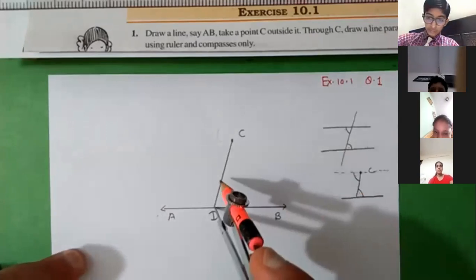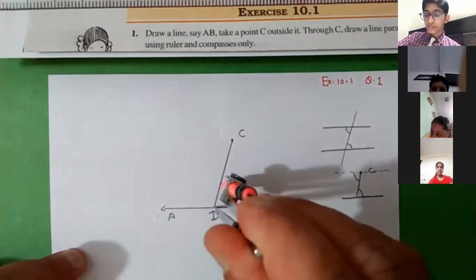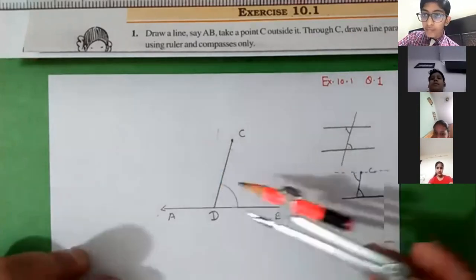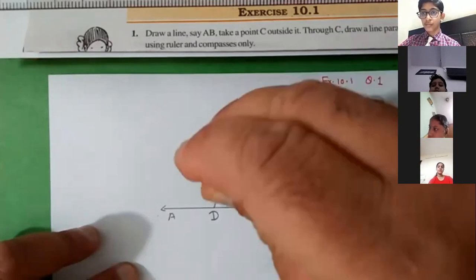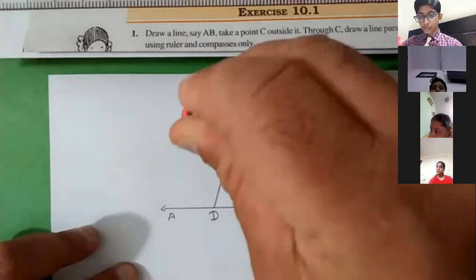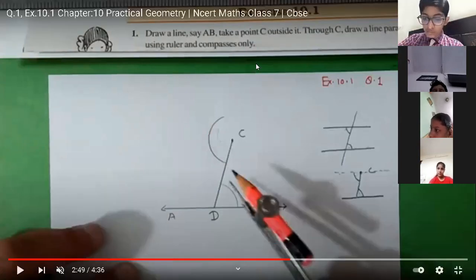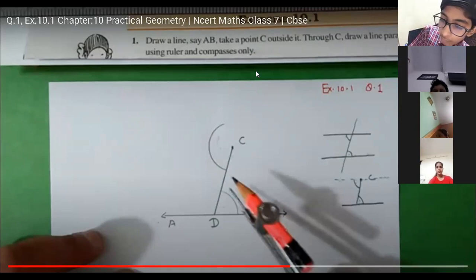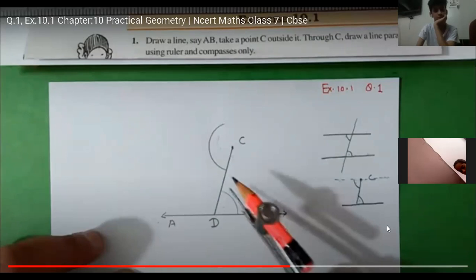You can take any radius. Put your needle on point D and draw an arc. I have taken any radius and am drawing an arc like this. Now do not change the compass radius — do not change it — and put your needle again on point C and draw another arc like this. All of you draw these two arcs.